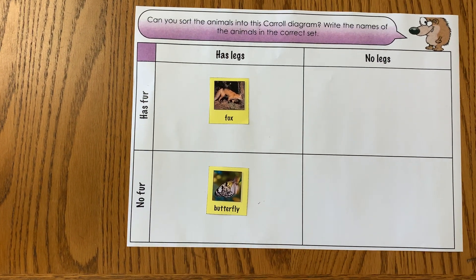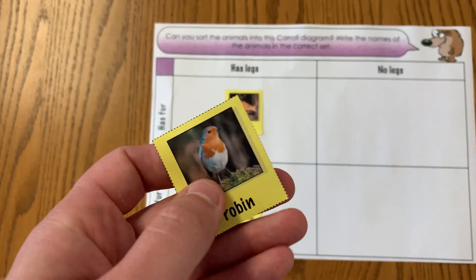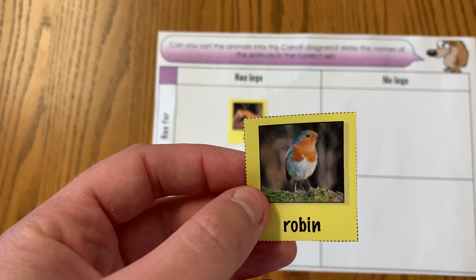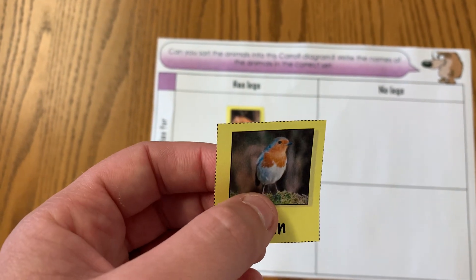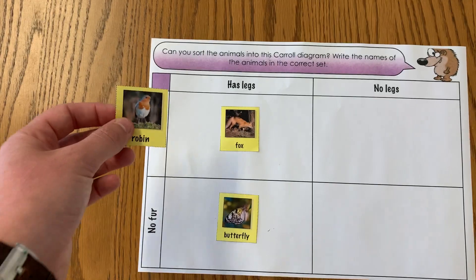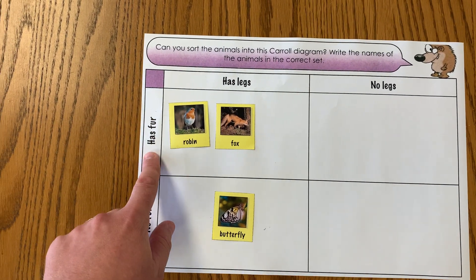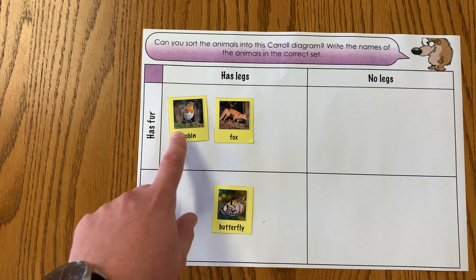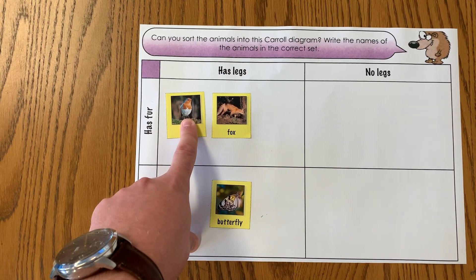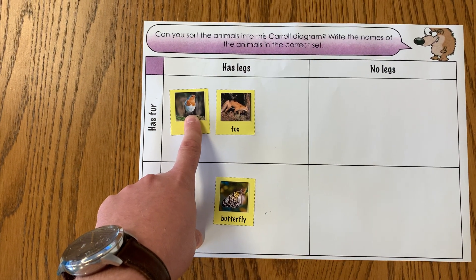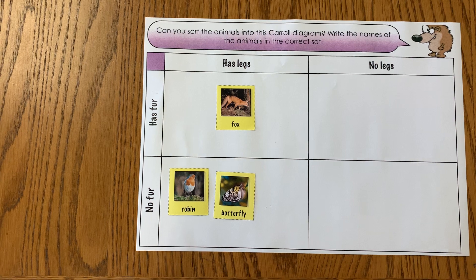Let's do a couple more — I've got a robin now. I can see it's got legs, but I need to think if it has fur. It's a bird, so actually it has feathers. So I'm going to move it down to the no fur box.